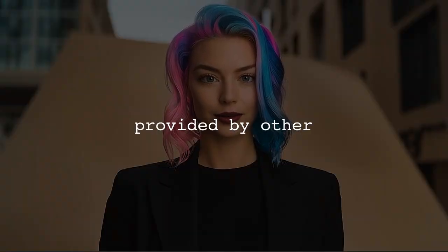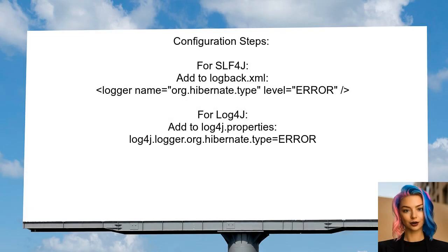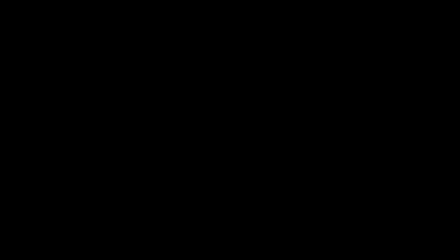Now let's look at the answers provided by other users. An alternative solution suggests that Hibernate enables MySQL show warnings by default, which can lead to performance issues. To disable this, you can set Hibernate to use a proper logger by adding a JVM runtime parameter — either dorg.jboss.logging.provider.slf4j or dorg.jboss.logging.provider.log4j. If you choose slf4j, configure logback.xml by adding a logger for Hibernate types at the error level. For log4j, add a similar line in log4j.properties to set the logger for Hibernate types to error.